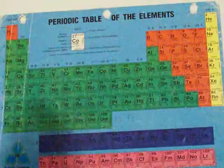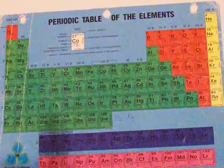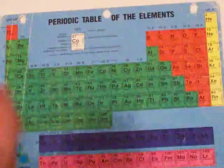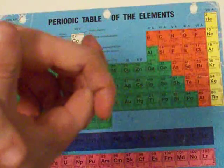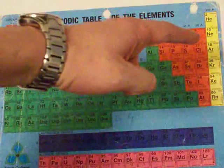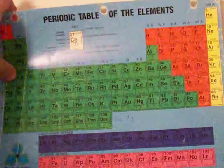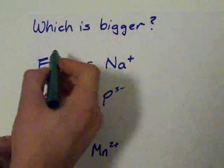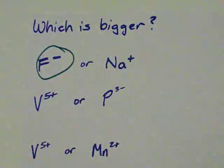Electrons have a negative charge, protons have a positive charge, so more protons in the nucleus cause the electrons to be held tighter, and that means the atom or ion with fewer protons is the bigger one. Fluoride is the bigger atom of these two.